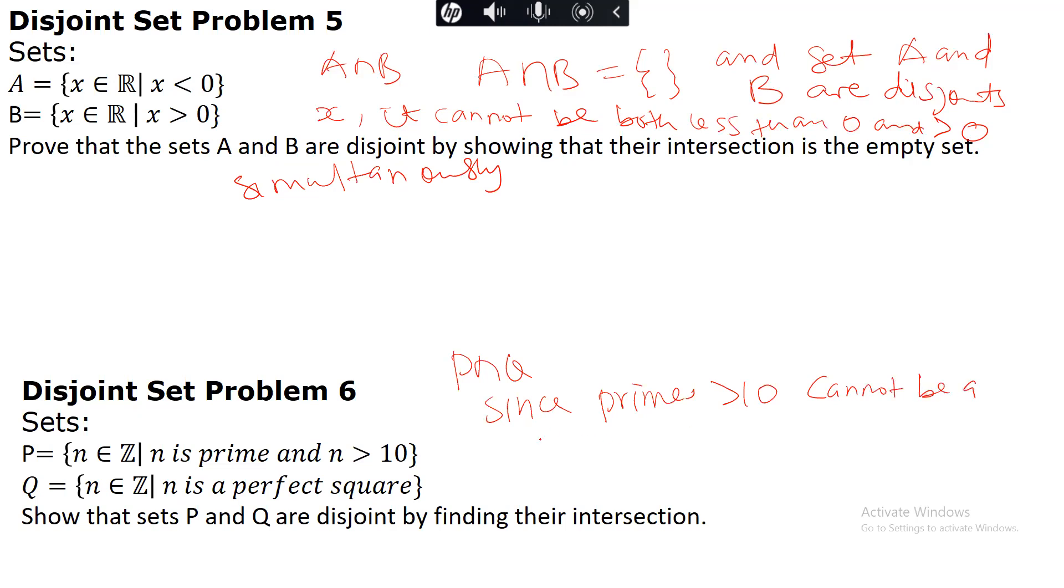P intersection Q is going to be an empty set. So what that means is that, therefore, P and Q are disjoint sets.